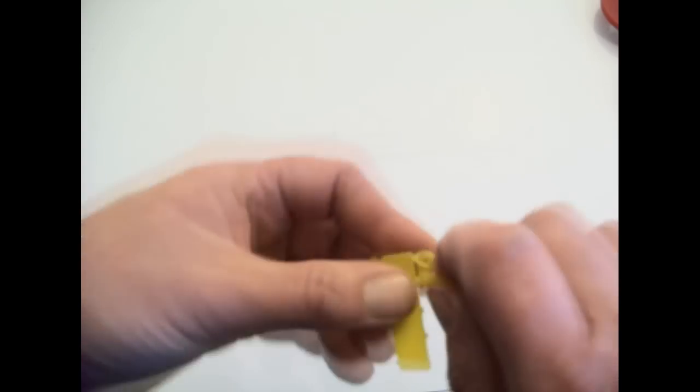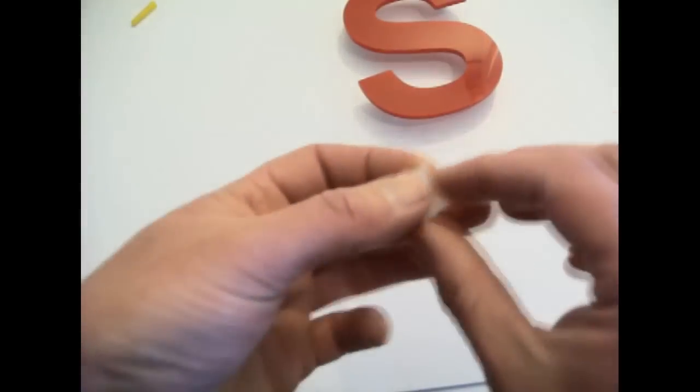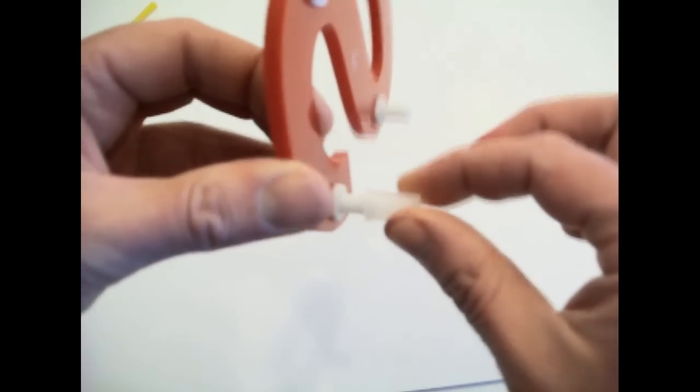So drill your holes, then put your yellow plug in the wall, followed by the fixing, which would snap into the back of the letter.